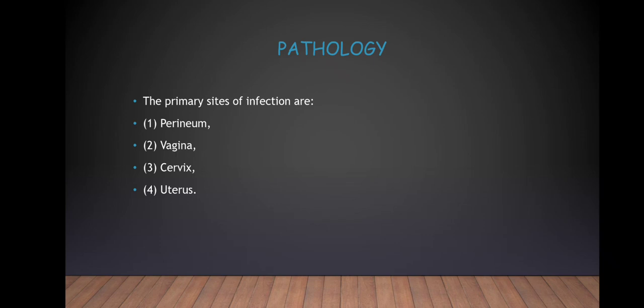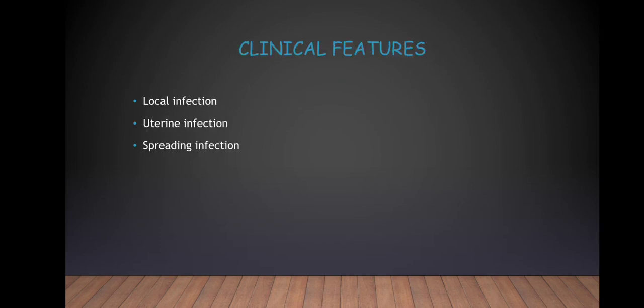Pathology: The primary sites of infection are: 1. Perineum. 2. Vagina. 3. Cervix. And the uterus. Clinical features are classified according to: local infection, uterine infection, and spreading infection.